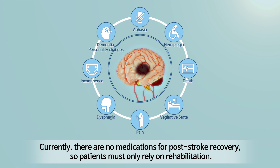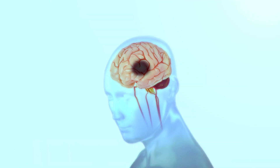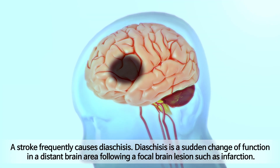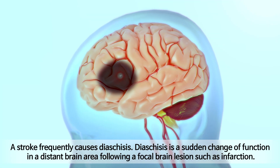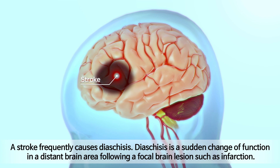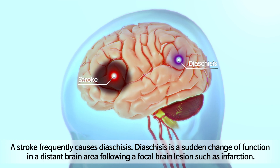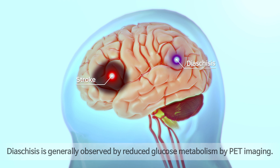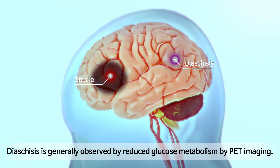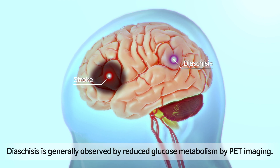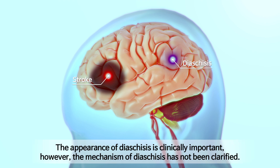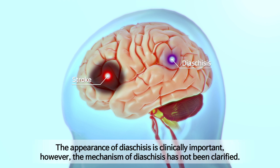Currently, there are no medications for post-stroke recovery, so patients must only rely on rehabilitation. A stroke frequently causes diaschisis. Diaschisis is a sudden change of function in a distant brain area following a focal brain lesion such as infarction, and is generally observed by reduced glucose metabolism via PET imaging. The appearance of diaschisis is clinically important; however, the mechanism has not been clarified.